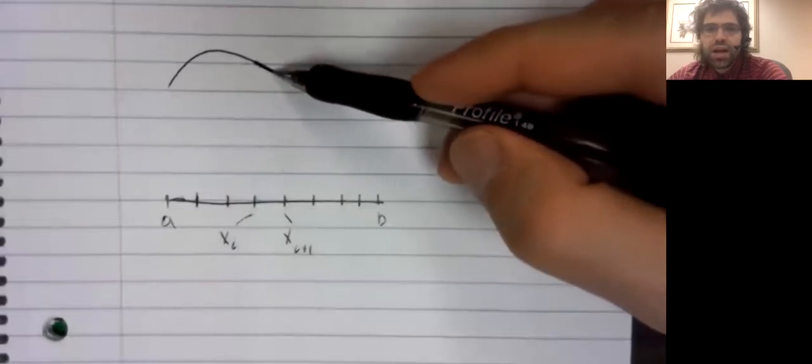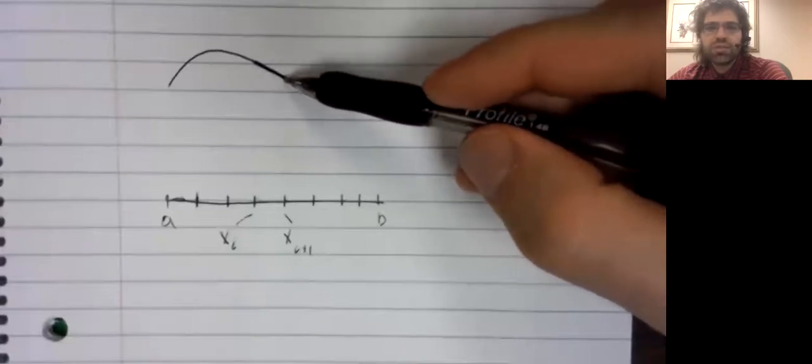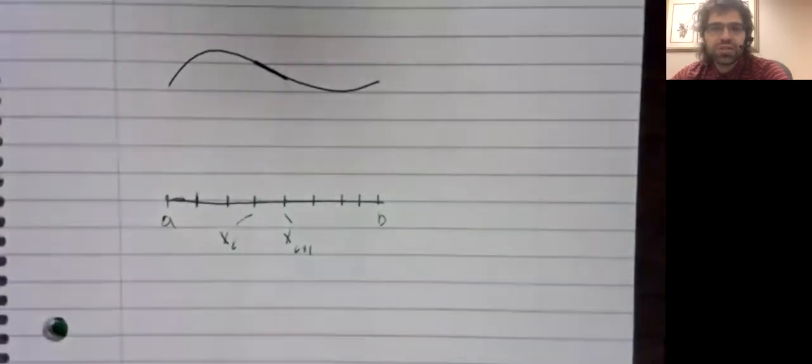And the length of a line segment connecting two points is the distance between those points. And we have a formula, a distance formula. So let's go.